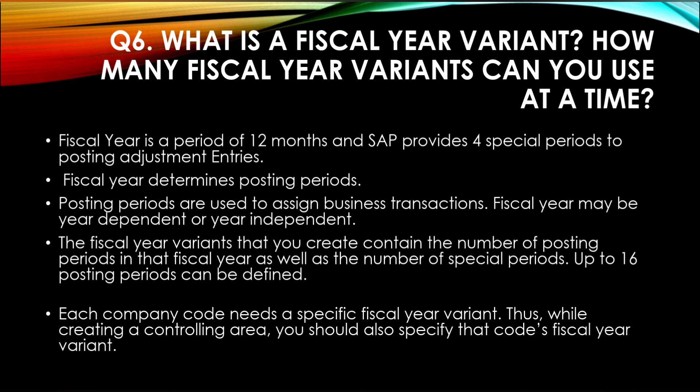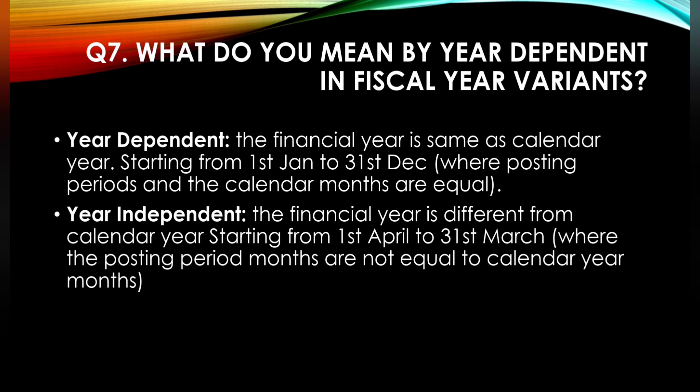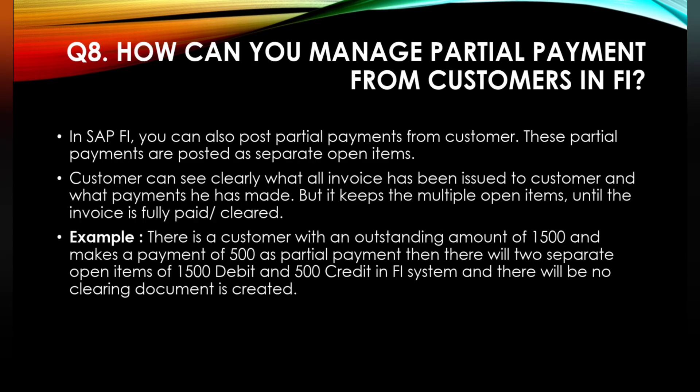The next question is: what do you mean by year-dependent and year-independent fiscal year variants? Year-dependent means the financial year is the same as the calendar year, starting from 1st January to 31st December, where posting periods and calendar months are equal. Year-independent means the financial year is different from the calendar year, starting from 1st April to 31st March, where posting period months are not equal to calendar year months.